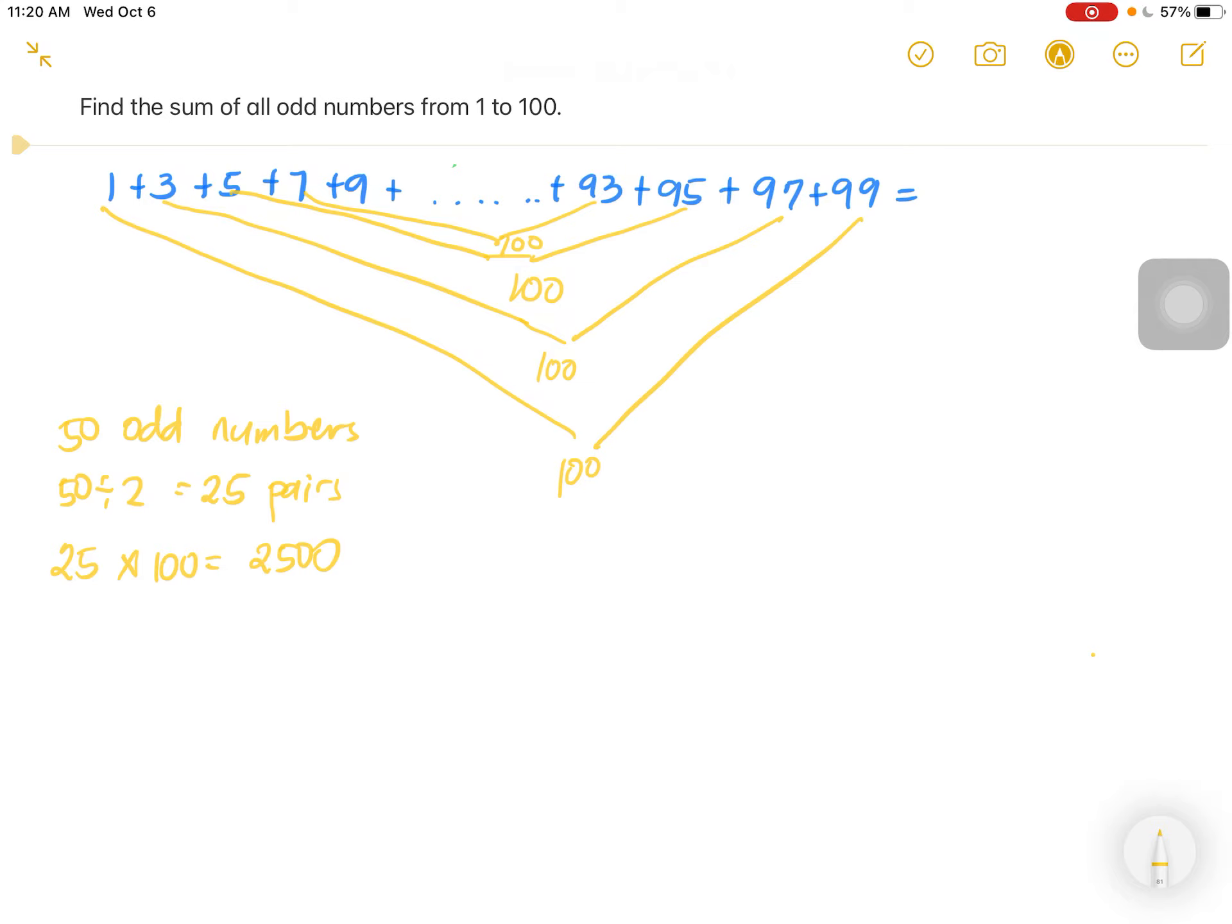So yes, this is the answer already, 2,500. You can check it by adding everything, each number one by one. It's still 2,500.